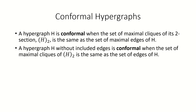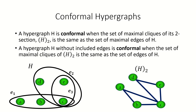For hypergraphs without included edges, this can be simplified to: a hypergraph is conformal when the set of maximal cliques of its two-section is the same as its set of edges. Recall that a two-section is the ordinary graph built from a hypergraph using the same vertices, where two vertices are adjacent if they share an incident edge in the hypergraph.